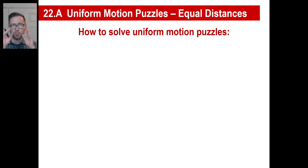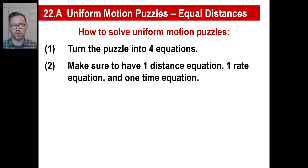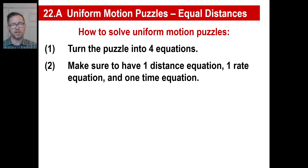These are the steps. Make sure you pause this and write these down, then use these as a system to solve all these equations. Number one: turn the puzzle into four equations. Number two: make sure to have one distance equation, one rate equation, one time equation, and the fourth equation will be whatever is left that you can find from the paragraph. At first you might struggle a little bit to find that fourth equation — that's completely okay.